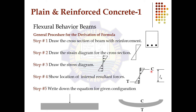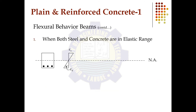The internal resistive compressive force C and the internal resistive tensile force T act at a distance La apart. When load is applied and the beam bends, the upper face is in compression and the bottom face is in tension. C represents the concrete's contribution as the internal compressive force, and T is the internal tensile force coming from the reinforcement. The distance between these two is La. There are three cases to consider.